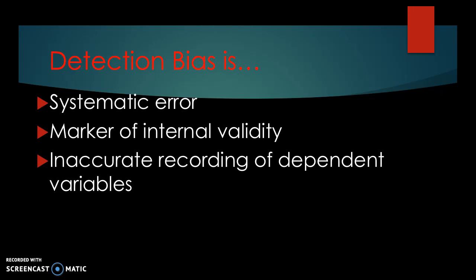Detection bias is a systematic error that affects the internal validity of a study through inaccurate recording of the dependent variables or outcomes.